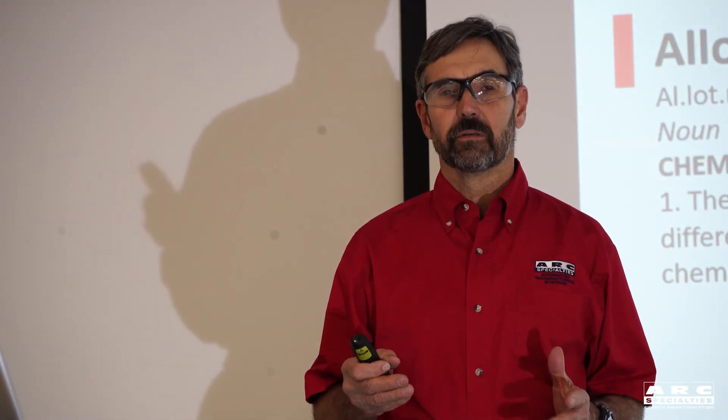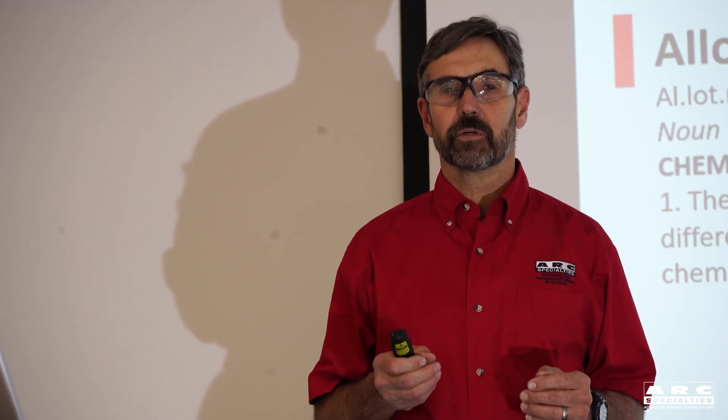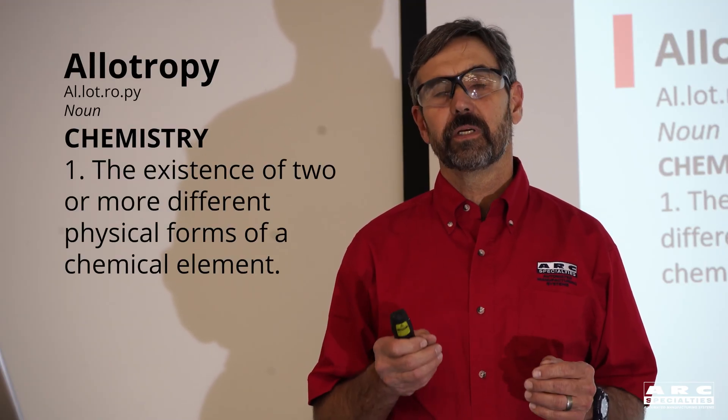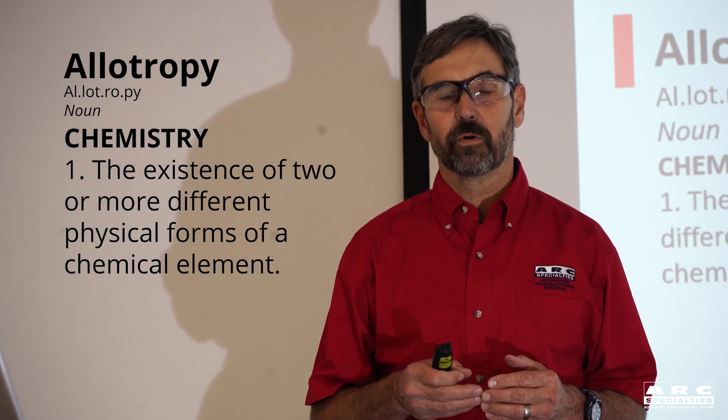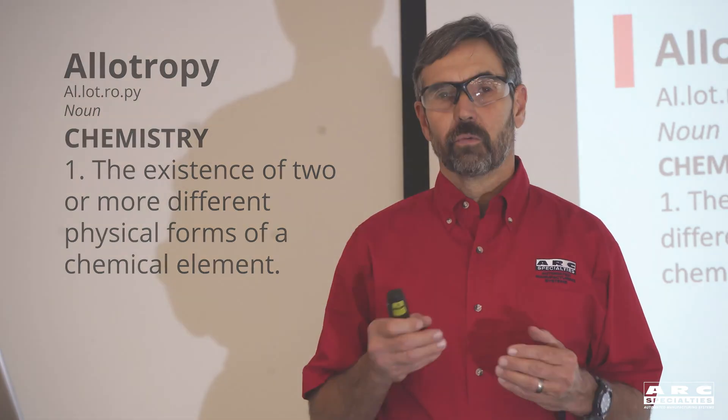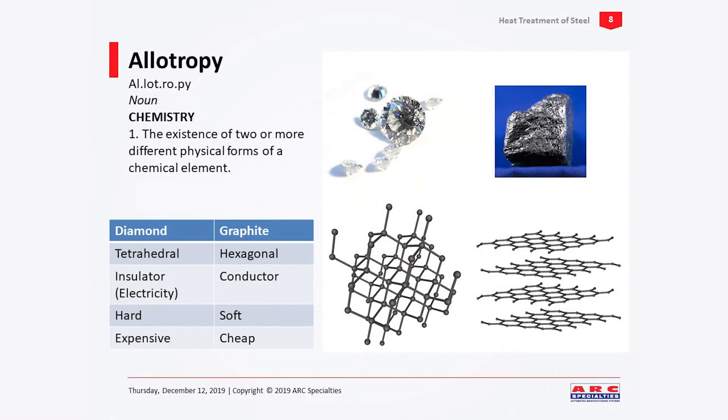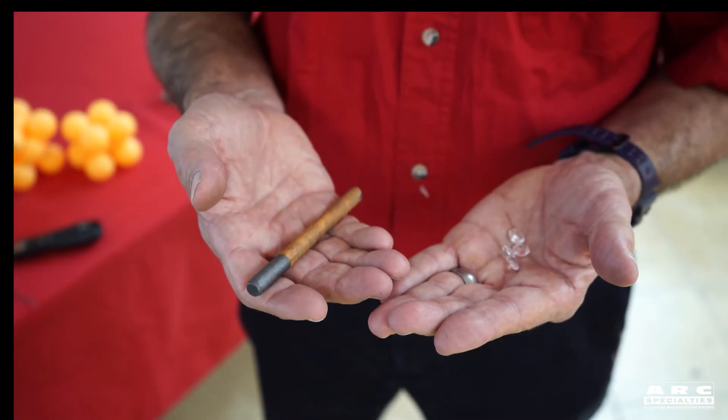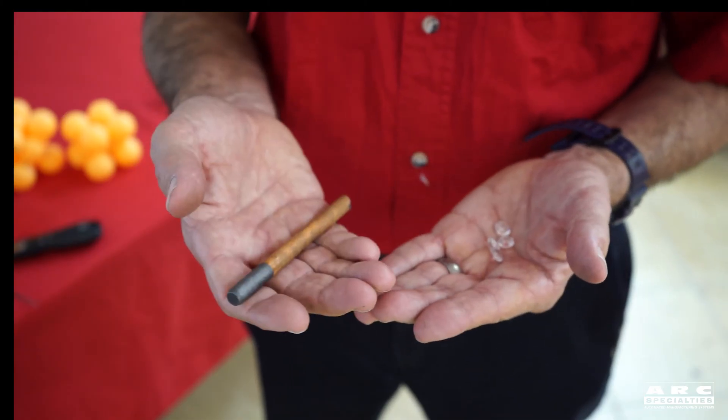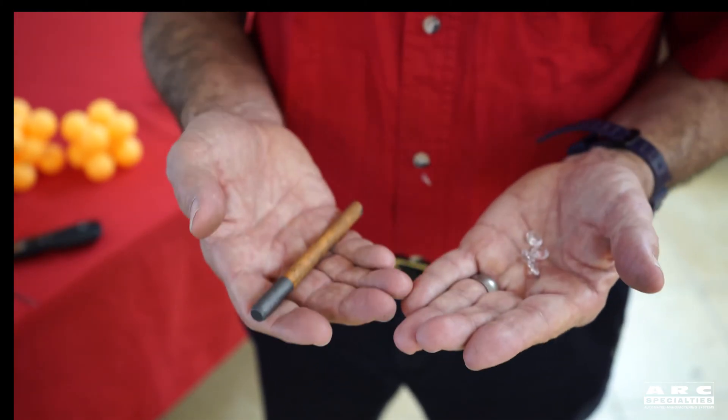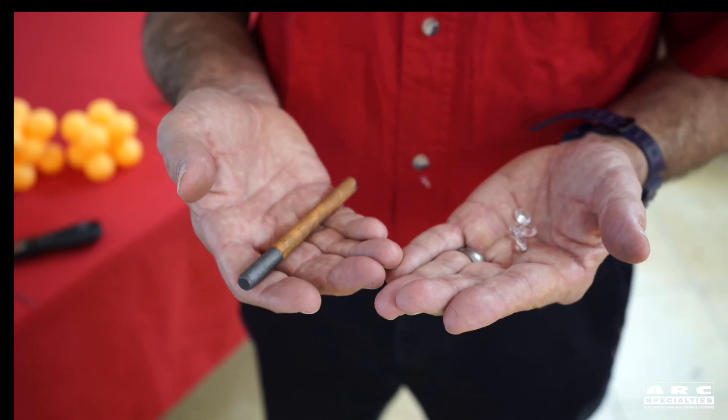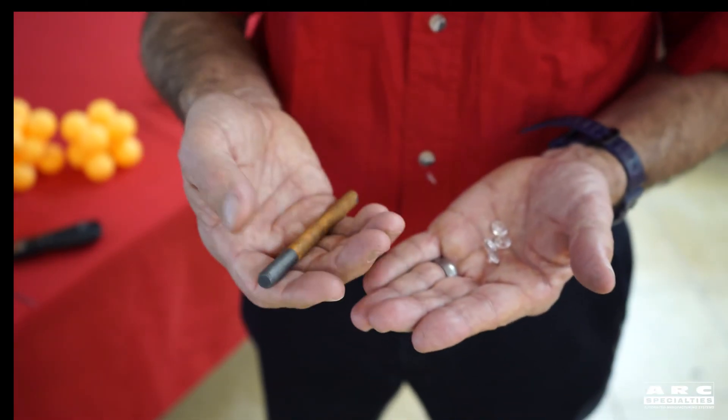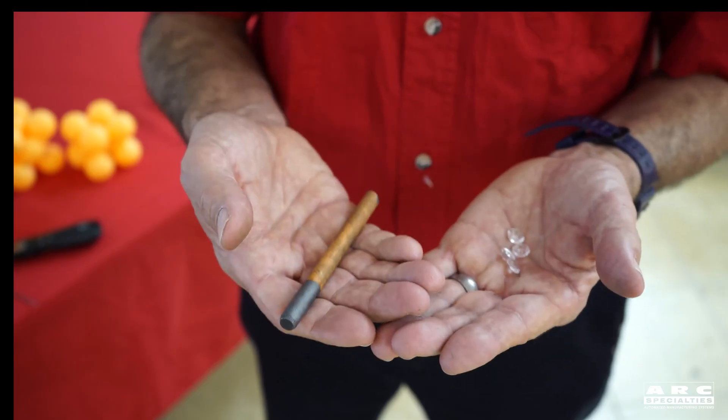So why is it we can heat treat steel? You have to understand a chemical term called allotropy. This means that a material can exist in more than one physical form at room temperature. One great example of this is carbon. Everybody's familiar with diamonds and graphite. And the difference between the two is simply the formation of the atoms. In the case of diamonds, it's tetragonal. In the case of graphite, it's hexagonal. Simply that small difference changes it from an insulator to a conductor, from hard to soft, from expensive to cheap.